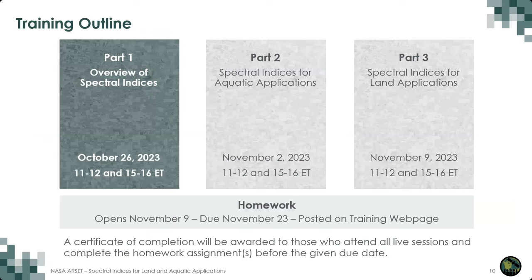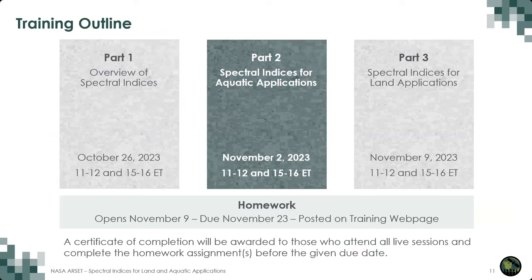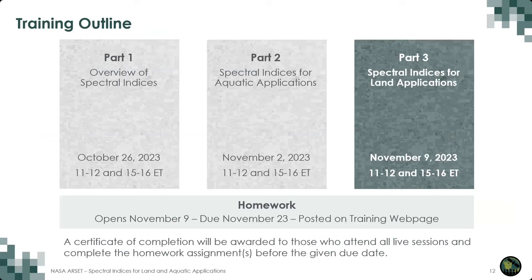In part one of the training, we will focus on an overview of what spectral indices are and highlight the Normalized Difference Vegetation Index, or NDVI. In part two, colleagues Juan and Brittany will discuss commonly used spectral indices for aquatic applications. In part three, Brittany will highlight additional land-based spectral indices. We will have one homework available during the last session on November 9th — a simple Google Form due by November 23rd. Attending all live sessions and completing the homework earns you a certificate of completion, issued about two months afterwards.